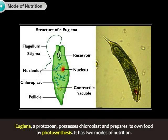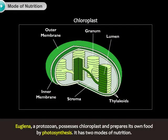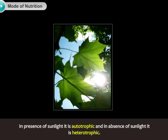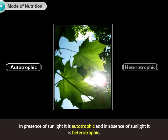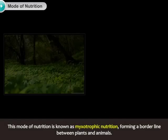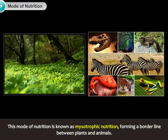Euglena is a protozoan that possesses chloroplasts and prepares its own food by photosynthesis. It has two modes of nutrition: in the presence of sunlight it is autotrophic, and in the absence of sunlight it is heterotrophic. This mode of nutrition is known as mixotrophic nutrition, forming a borderline between plants and animals.